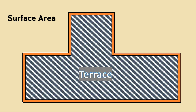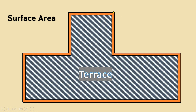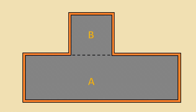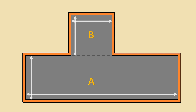We'll calculate the area of this at first, and then we'll calculate the area of the exposed surface of the parapet wall. In order to calculate this hatched area, we'll divide our terrace according to its shape so that we can easily calculate the area. For this particular terrace, I've divided it into two parts, A and B, forming two rectangles so we can easily calculate the length and width of both. The inner length of portion A is 50 feet, inner width is 18 feet, and portion B has a length of 13 feet and width of 15 feet.